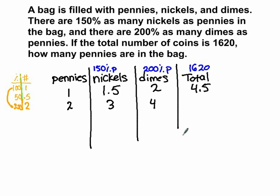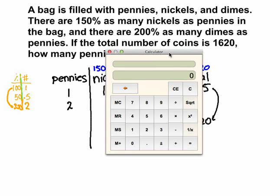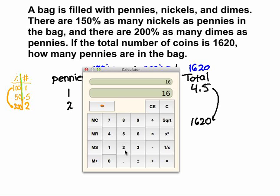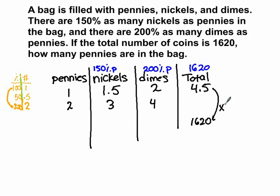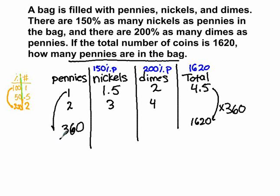The next step is straightforward. In this ratio we know the total is also 1,620. So the question is: what do I need to multiply 4.5 by to get to 1,620? Using the calculator: 1,620 divided by 4.5 equals 360, which means I'm multiplying everything by 360. The problem asks how many pennies are there, so you take the pennies and multiply by 360. The answer is there are 360 pennies.